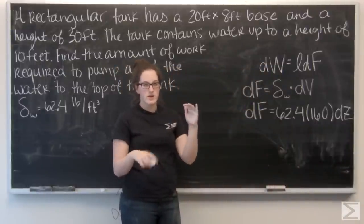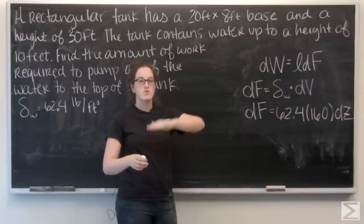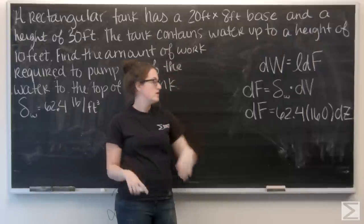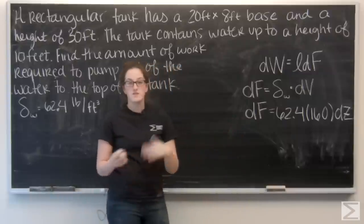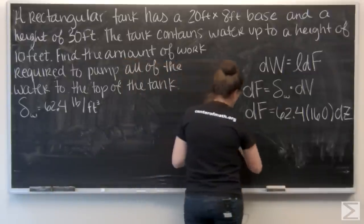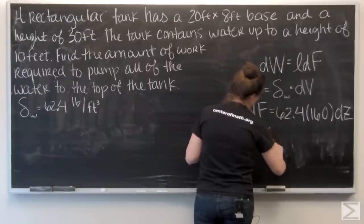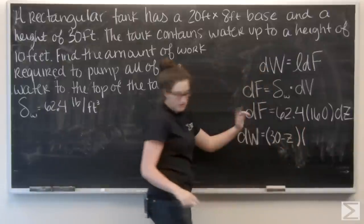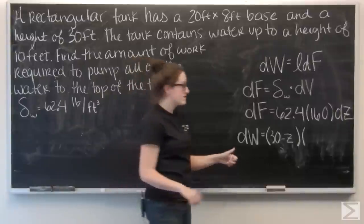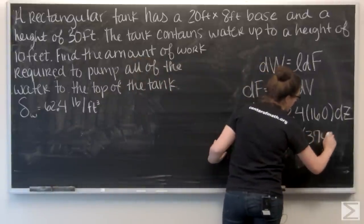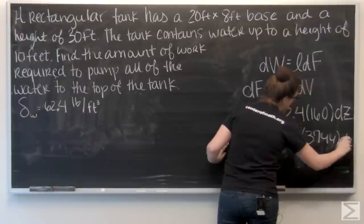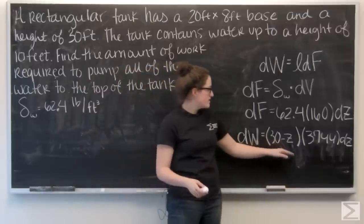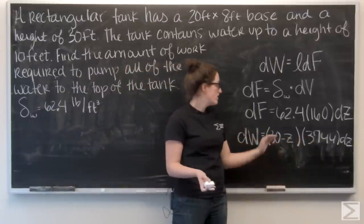So, for df, I just need to multiply this by displacement. And our displacement is going to vary, right? The water all the way at the bottom of the tank is going to have to move all the way up. But the stuff at 10 feet is only going to have to move 20 feet. So, let me think about my displacement as 30 minus z. Use my handy calculator to find out that is 3,744.